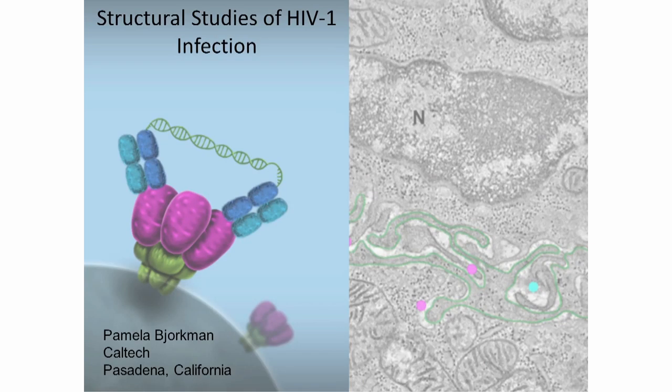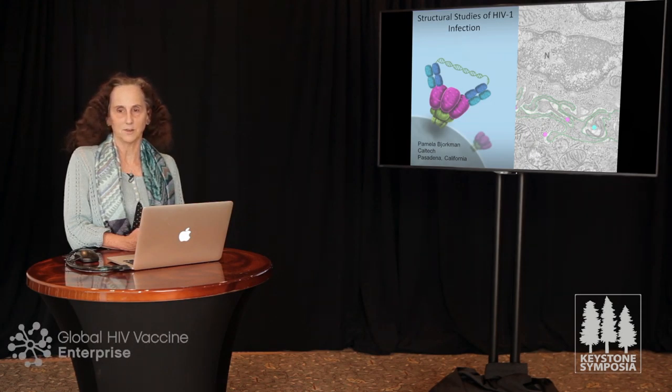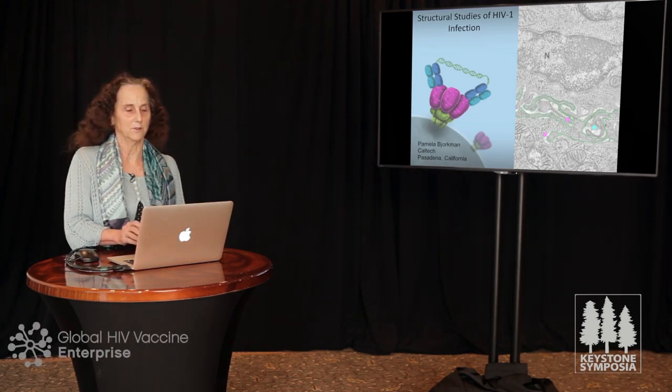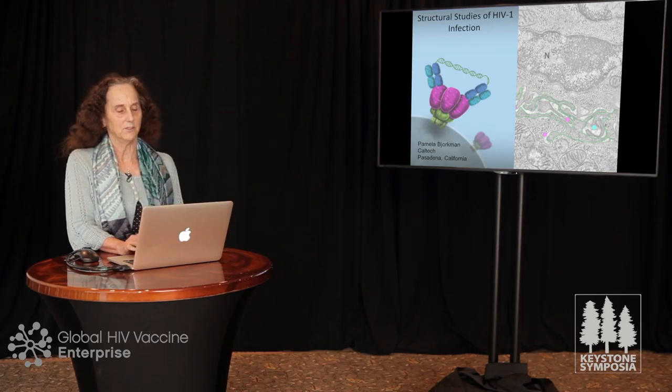Hello, my name is Pamela Bjorkman, I'm from the California Institute of Technology. Today I'll be telling you about two aspects of HIV-1 infection that we study in my lab, both somewhat based on structural studies. The first involves making reagents that would stop HIV from infecting or treat an ongoing infection, and the second looks at what HIV looks like when it's actually in infected tissues.